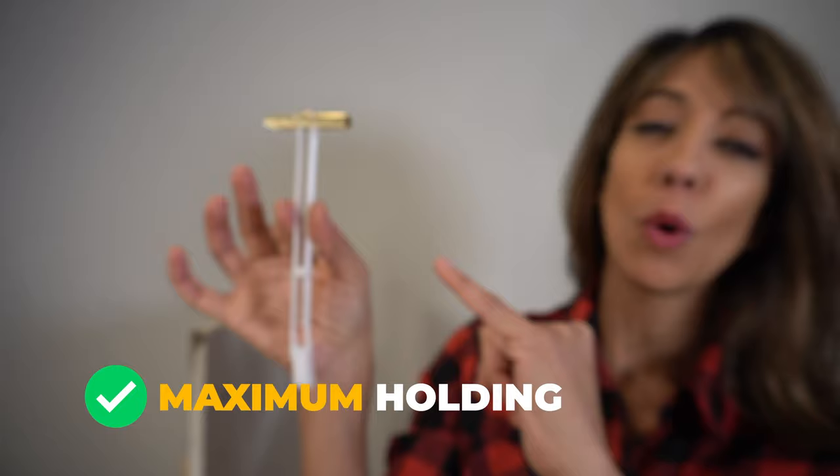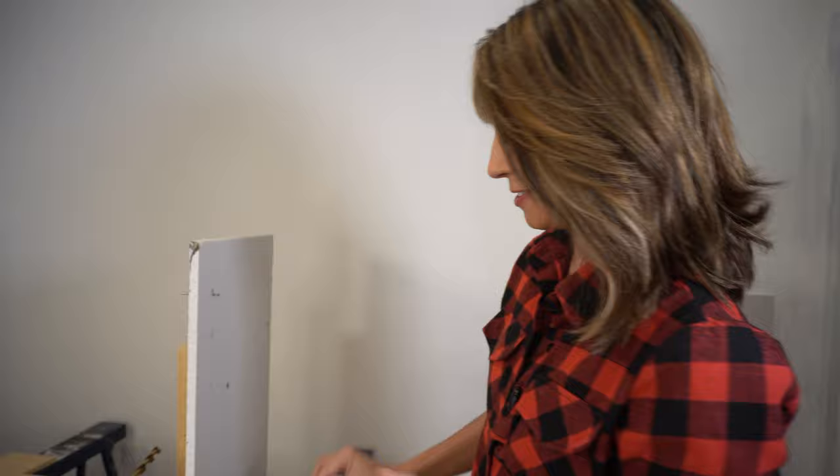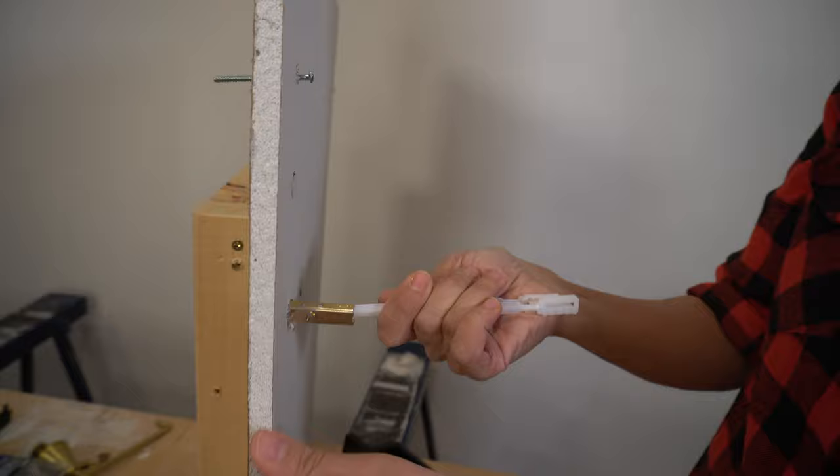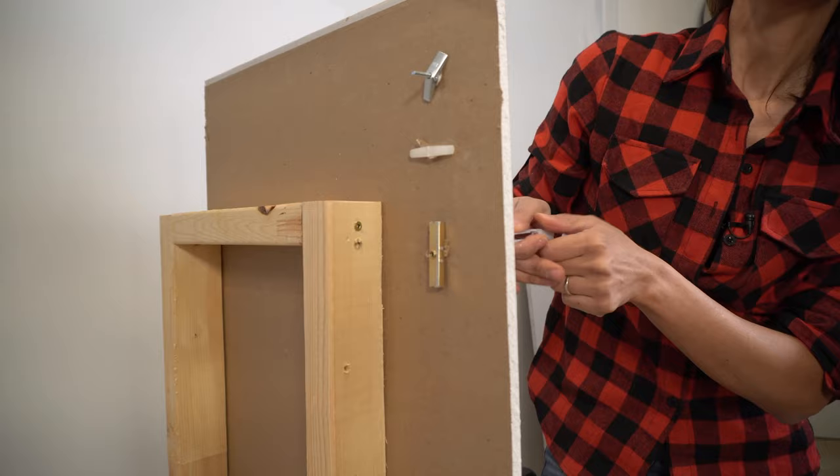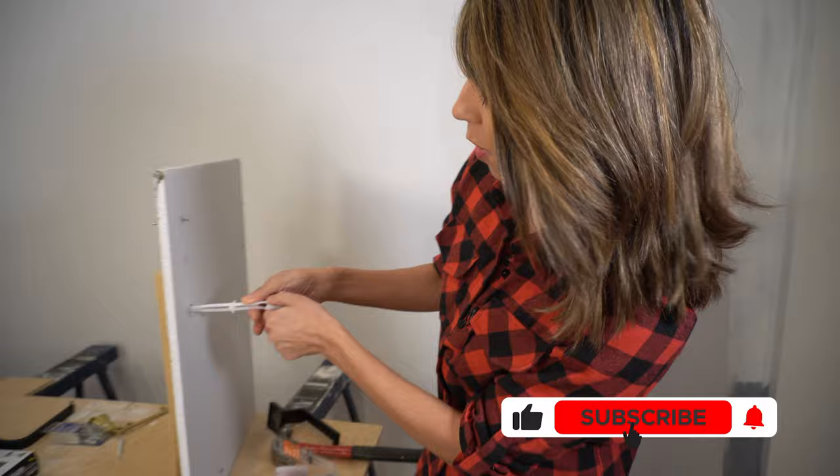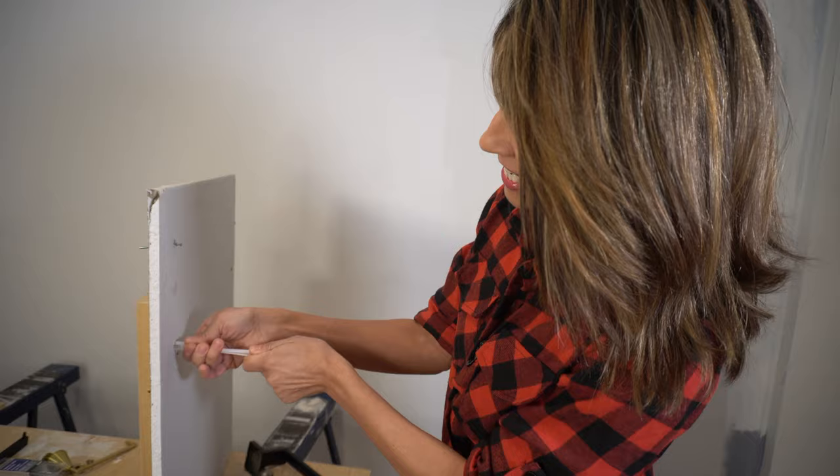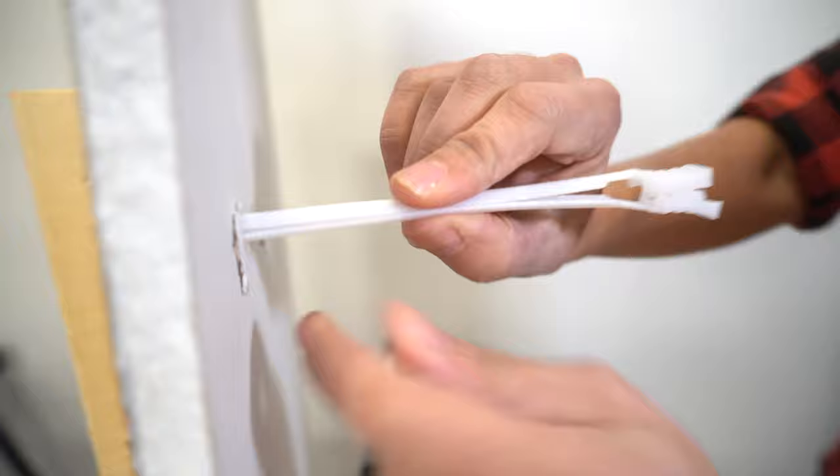This right here is what we call a snap toggle and it is absolutely amazing. It has maximum holding power which you know is something I like especially in a drywall anchor. You're going to collapse it like this and insert it through your drywall. We're going to pull that tight. Once you've inserted it you're going to push this almost like a zip tie. You're going to ratchet this in and this creates tension which is what you want. The plastic will just snap off like that and you're ready for your machine screw.